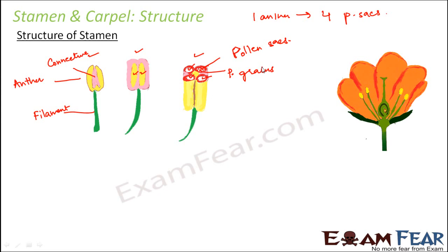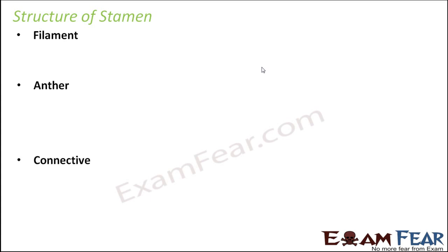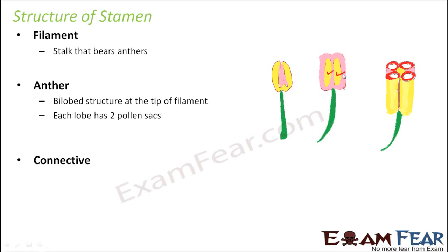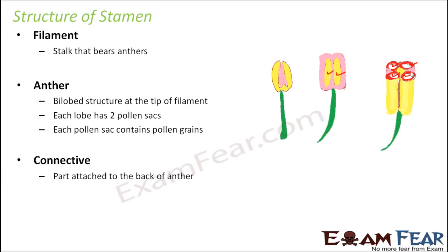To summarize the structure of the stamen: the filament is the stalk that bears the anthers; the anther is the bilobed structure at the tip of the filament, with each lobe having two pollen sacs — giving four pollen sacs total — each containing pollen grains, the male gametes. The connective is attached to the back of the anther and provides support to its lobes. These three parts together constitute the stamen, the male reproductive part of a flower.